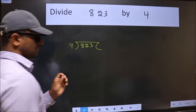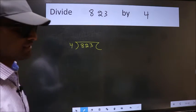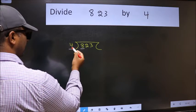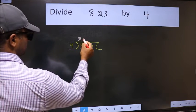This is your step 1. Next, here we have 8 and here 4. When do we get 8 in 4 table? 4 2's 8.